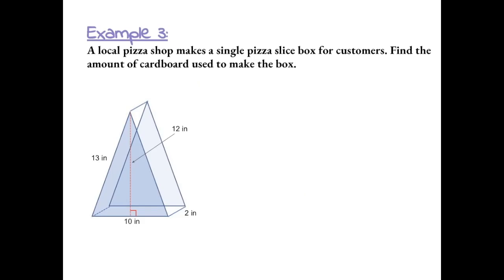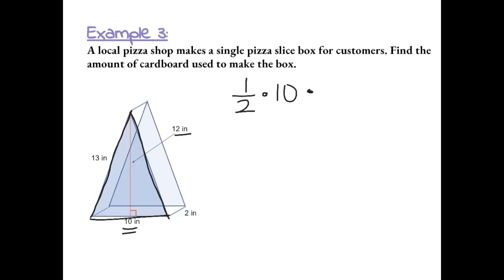Example 3. A local pizza shop makes a single pizza slice box for customers. Find the amount of cardboard used to make the box. First, we find the area of the front triangle using one-half times the base times the height: one-half times 10 times 12. One-half times 10 is 5, and 5 times 12 gives us 60. Because the front and back of the box are the same size triangles, we have 60 used two times.